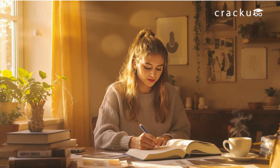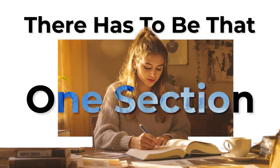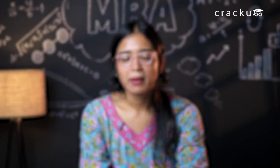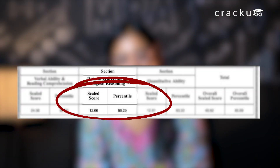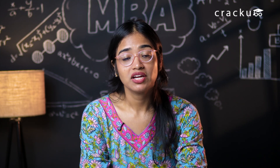Being a non-engineer, if there has to be that one section in CAT that has haunted me the most, it's definitely DILR. And it's quite clear from my CAT 2024 DILR percentile, which was just 66. DILR wasn't just a weak point for me — it was that section that made me doubt whether I could even crack CAT with a top percentile or not.